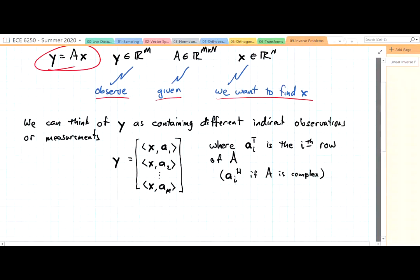So if we have m greater than n, then this is the case with more observations than unknowns.